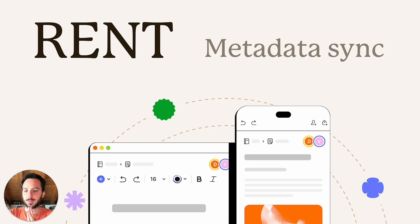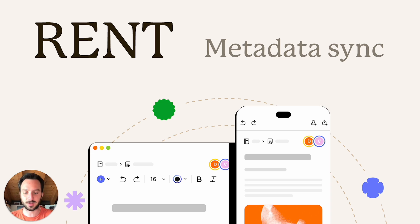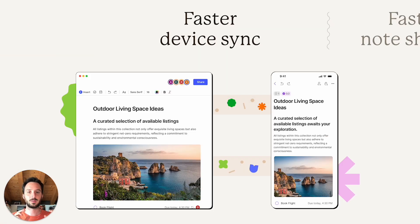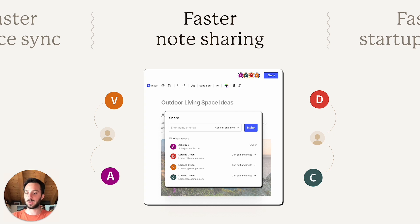Today we are talking about RENT. RENT is a new way to sync note metadata. Thanks to RENT, we are going to make the synchronization of many things on Evernote much faster. For instance, syncing note lists between devices is going to be much faster, and sharing a note is also going to be much faster.